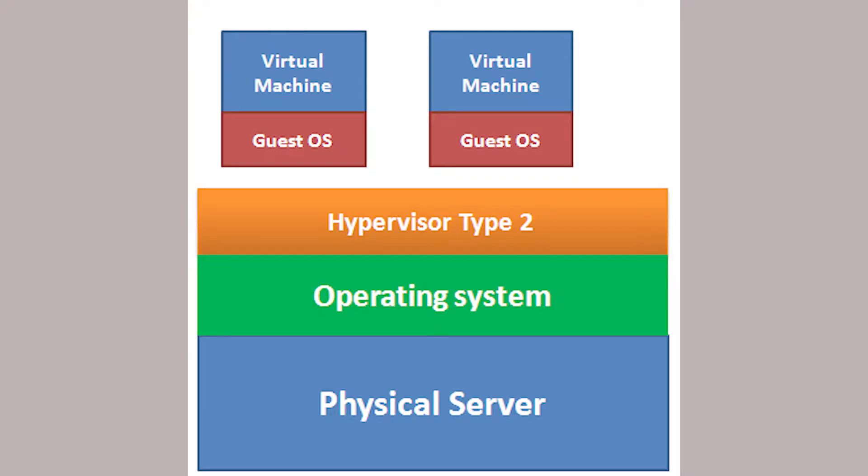Type 2 hypervisors, on the other hand, are just like any other applications on your computer. They run on top of the operating system that is already there. A couple of popular options are VirtualBox and VMware Workstation. The main benefit of Type 2 hypervisors is that they're really easy to install — just like installing another application and running it. Anyone can spin up different operating systems, which makes testing and learning much easier.